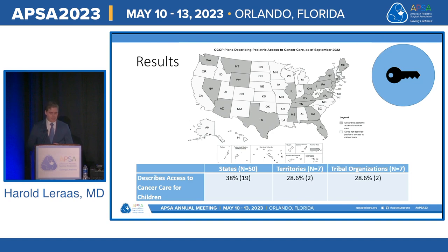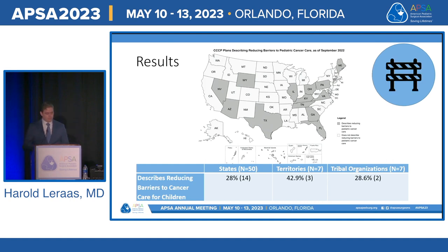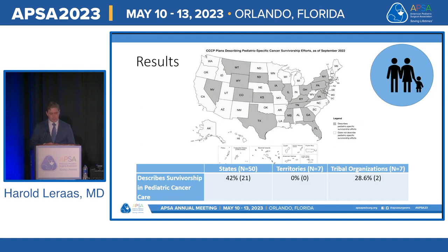Access to pediatric cancer care was discussed in 19 state cancer control plans, defined as care availability, geographic distribution of treatment centers, referral networks, and delays in care. Fourteen state plans discussed reductions of barriers to care — defined as affordability, logistic burden, financial support models, care pathways, and multidisciplinary care models that reduce clinic visits. Survivorship was mentioned in 42% of cancer control plans, including long-term care, surveillance, morbidity reduction, and continuity of care models.